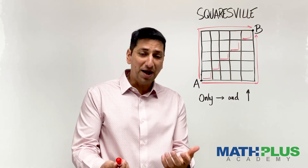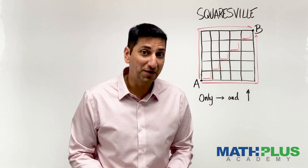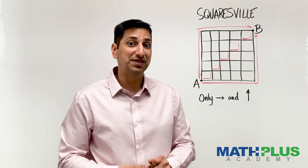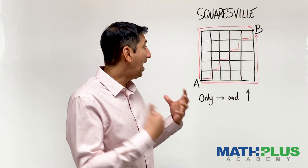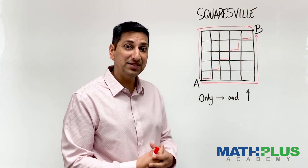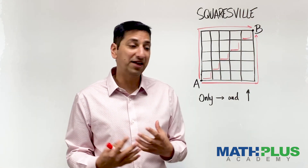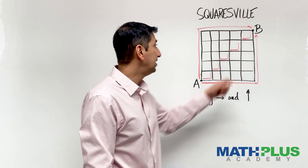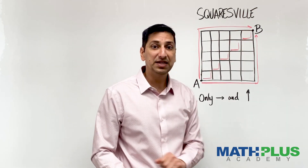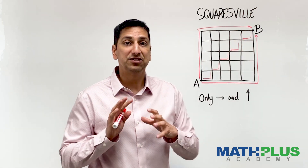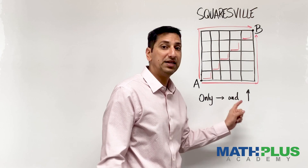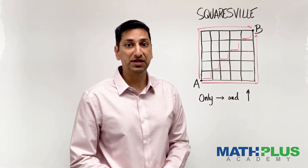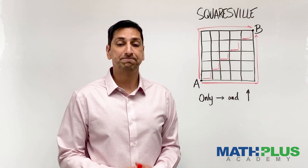So you're probably guessing what the question is for this math treat. It is: how many ways are there to get from Point A to Point B in Squaresville, if you follow the roads only going right and only going up?